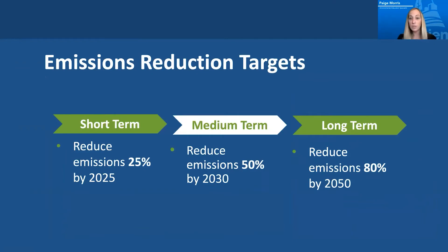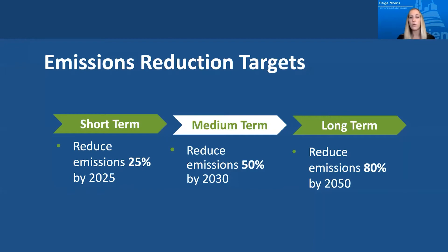This leads us to our emissions reduction targets for the climate action plan. In the short term, we'd like to reduce our emissions 25% by 2025. Staying in line with other Puget Sound cities, we'd like to reduce emissions 50% by 2030. We recognize that science is telling us we need to be more ambitious and incorporate a fair share consideration of our historic contributions to greenhouse gas emissions, which means targeting about 60% reduction by 2030. Our long-term goal is reducing emissions by 80% by 2050.